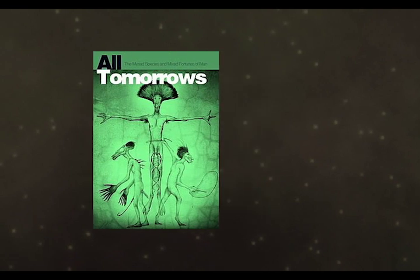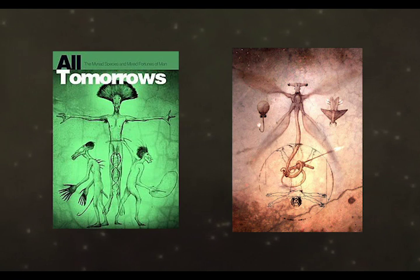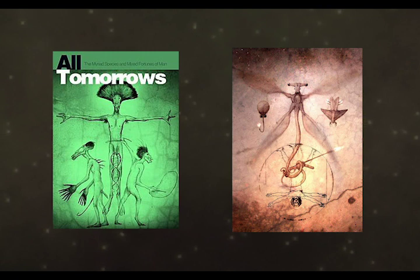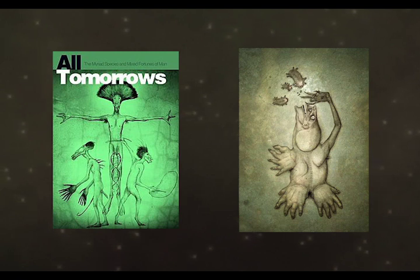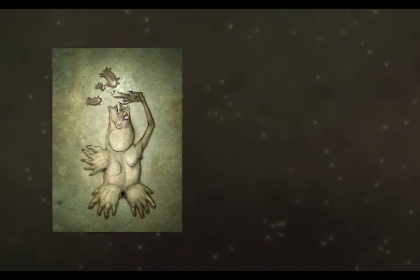Humanity is transformed into bizarre post-humans and spread out across the galaxy. The science of the book focuses on how the environments the post-humans live in affect their biology and the societies that eventually develop, such as the Lopsiders being placed in a high gravity environment. The designs and descriptions of these post-humans incorporate elements of body horror, as humans find viewing the human form being distorted disquieting.